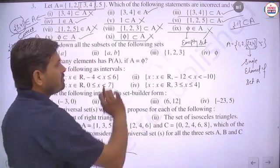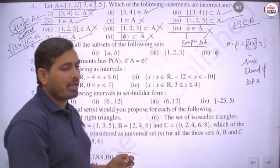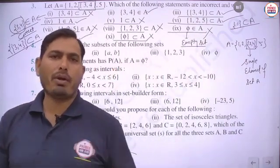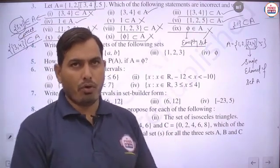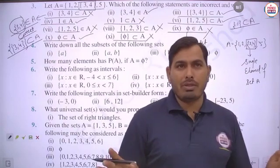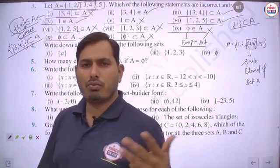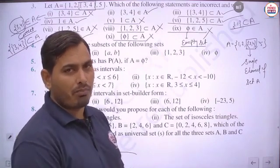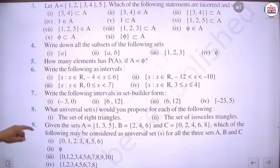The eleventh part involves checking whether a certain element is a subset of A, but that element is not found in set A. Therefore, this is an incorrect statement. Always keep in mind the difference between the belongs-to and subset symbols, and apply them properly. Pause the video, note down the answers, then we start question 4.